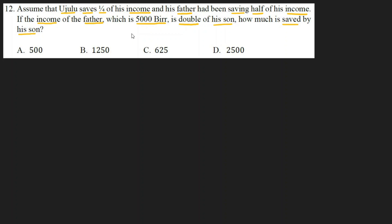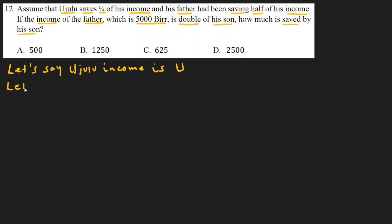After converting to a mathematical expression, we identify what is needed and solve step by step. Let's say Ujulu's income is U. Similarly, let's say the father's income is F.